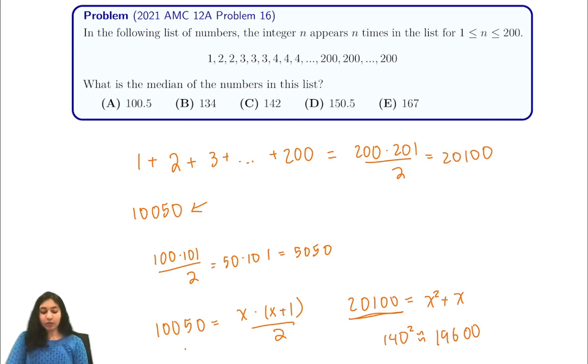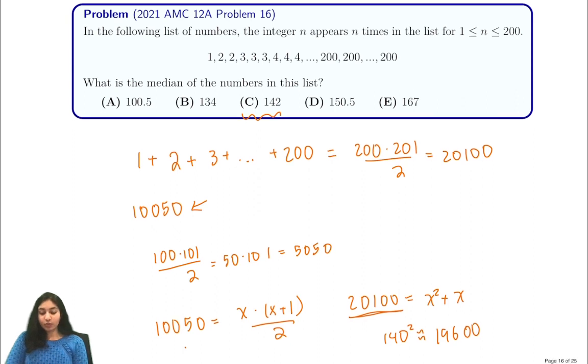And our answer choice being 142 is a good indication that we should try the number 142. And when you do, you'll see that 141 times 142 over 2 is just below 10,050. So 142 is indeed our answer.